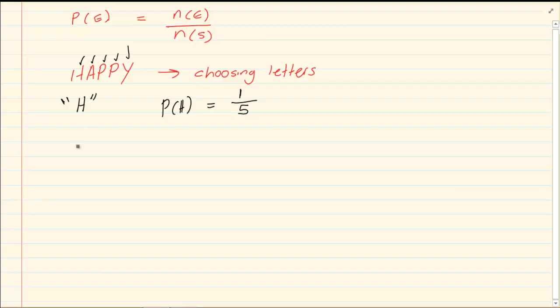What is the probability of getting a P? So again we count. How many P's are there? Two. So we have two over how many total? Five. So the probability of P is two over five.